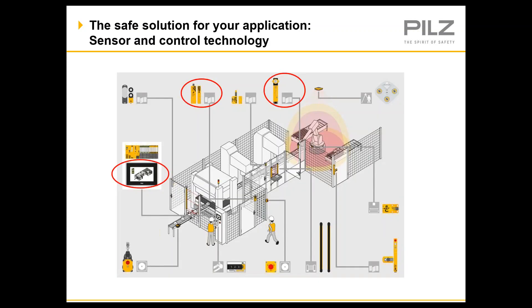If you've attended any of our other sessions, you know that we'd like to remind you that PILS offers a wide array of safety products and services. In this particular slide, there are 12 PILS products shown — from gate switches to door interlocks to light curtains — but what you don't see is the SDD, which resides in a panel somewhere where it collects data from these devices unseen.